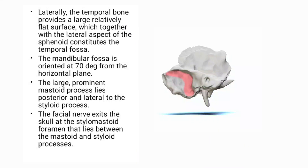Laterally, the temporal bone provides a large relatively flat surface which, together with the lateral aspect of the sphenoid, constitutes the temporal fossa. The mandibular fossa is oriented at 70 degrees from the horizontal plane. The large prominent mastoid process lies posterior and lateral to the styloid process. The facial nerve exits the skull at the stylomastoid foramen, which lies between the mastoid and styloid process.